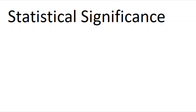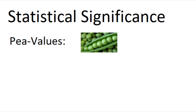First we need to understand how researchers define a statistically significant association. Genome-wide association studies use p-values to measure the statistical significance of an association between a genetic variant and a trait.